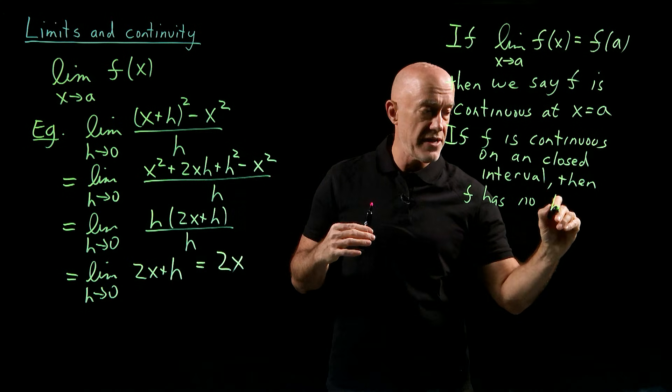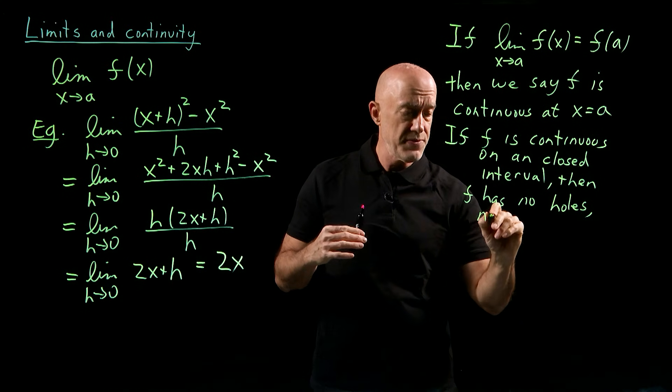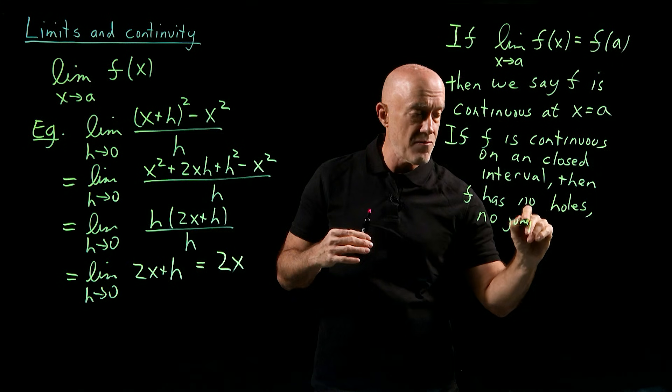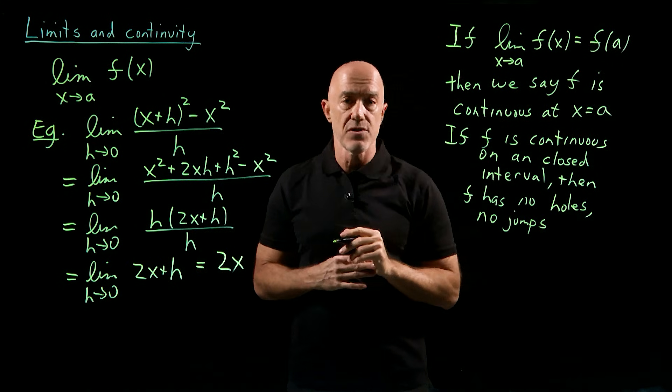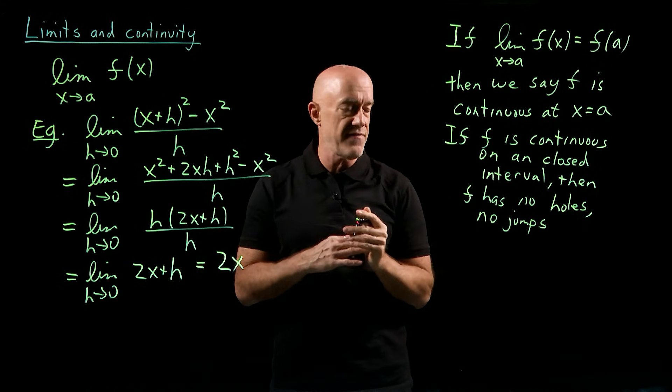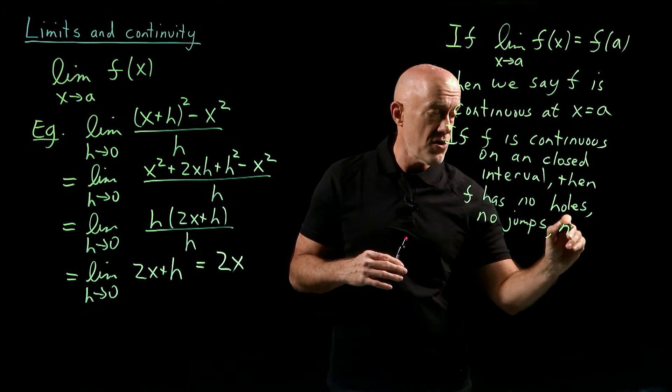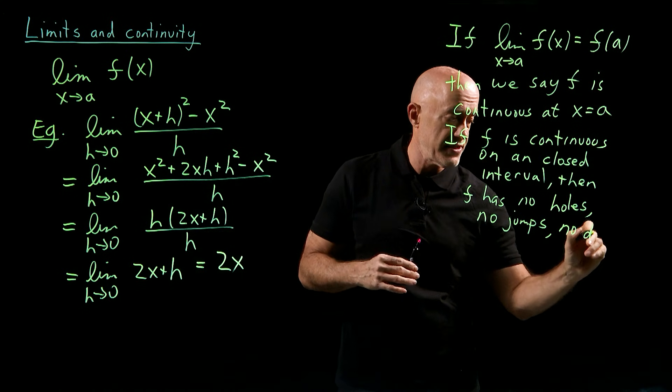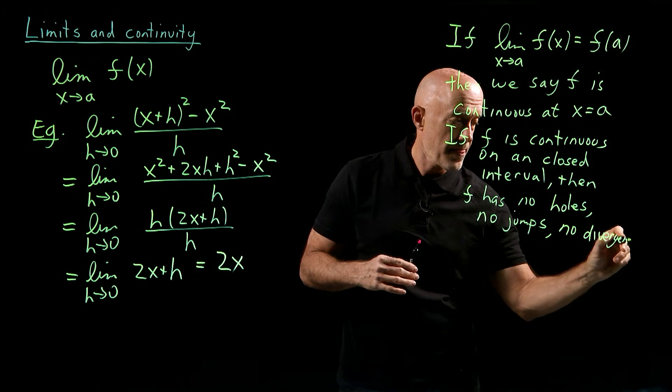Then we view that as f has no holes, not missing any points, no jumps, not jumping from one value to another value without passing through intermediate values, and no infinite divergences.